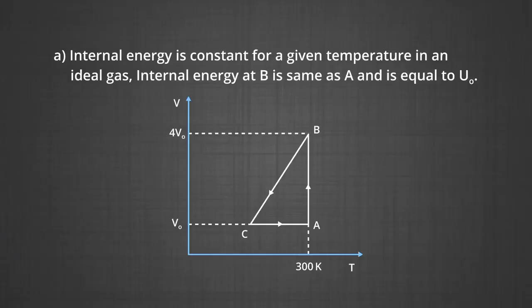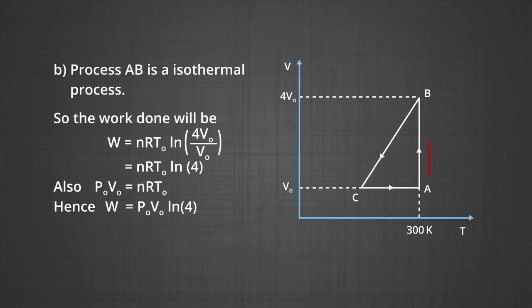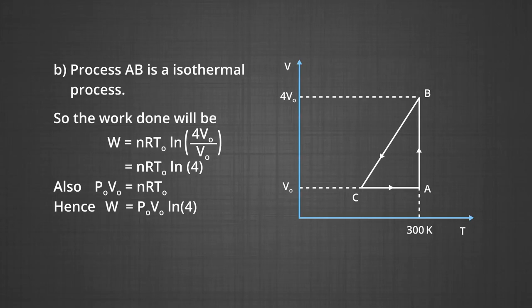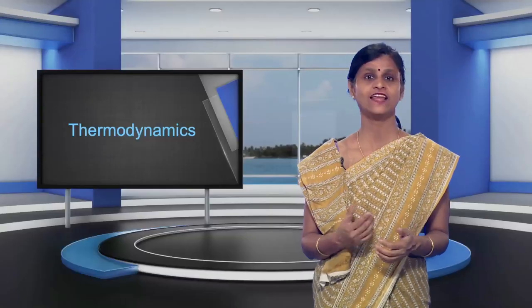Since internal energy is constant for a given temperature in an ideal gas, the internal energy at B is the same as at A, equal to U₀. Process AB is an isothermal process, so the work done is W = nRT₀ ln(4V₀/V₀) = nRT₀ ln 4. By the ideal gas equation, P₀V₀ = nRT₀, hence the work done comes out to be P₀V₀ ln 4.